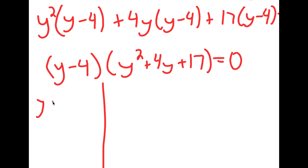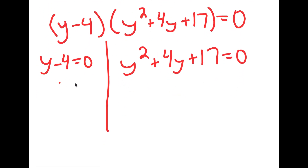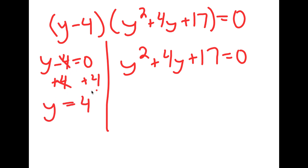This gives me two equations: y minus 4 equals 0, and y squared plus 4y plus 17 equals 0. For y minus 4 equals 0, I add 4 on both sides and get y equals 4.